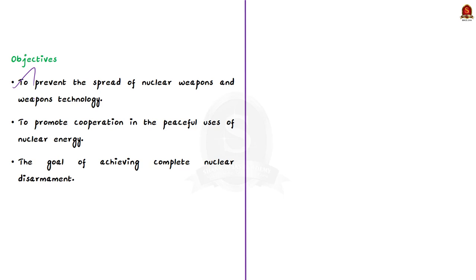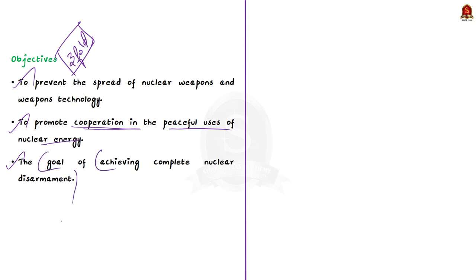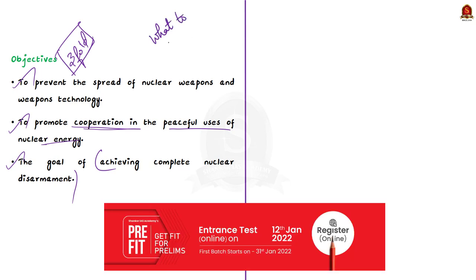The NPT is a landmark international treaty with three objectives: first, to prevent the spread of nuclear weapons and weapon technology; second, to promote cooperation in the peaceful use of nuclear energy; and third, to achieve complete nuclear disarmament. However, the treaty mentions what and why regarding disarmament — how it will be achieved remains the real challenge.